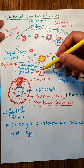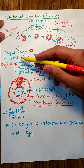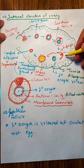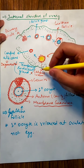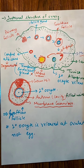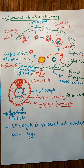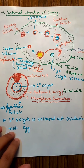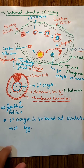So the sequence is: first corpus luteum forms, and the structure before that is corpus hemorrhagicum. These three corpuses — corpus hemorrhagicum, corpus luteum, and corpus albicans — are important for MCQs, as questions ask you to arrange them in ascending or descending order. In this way, the secondary oocyte is released from the ovary and the follicles undergo their formation.